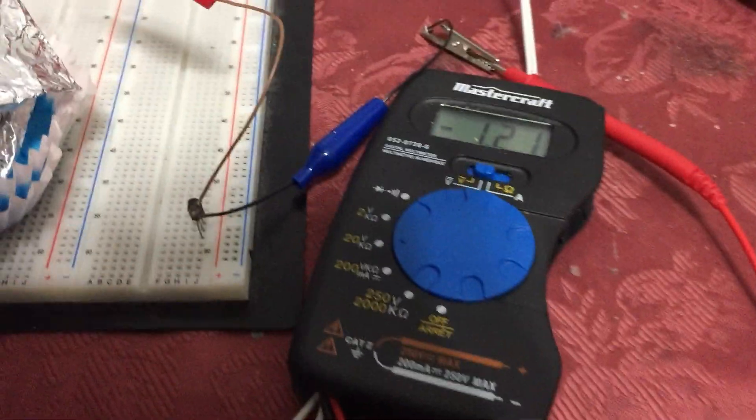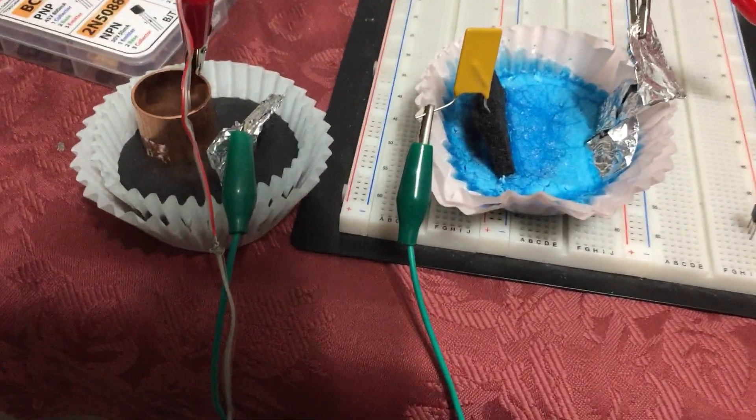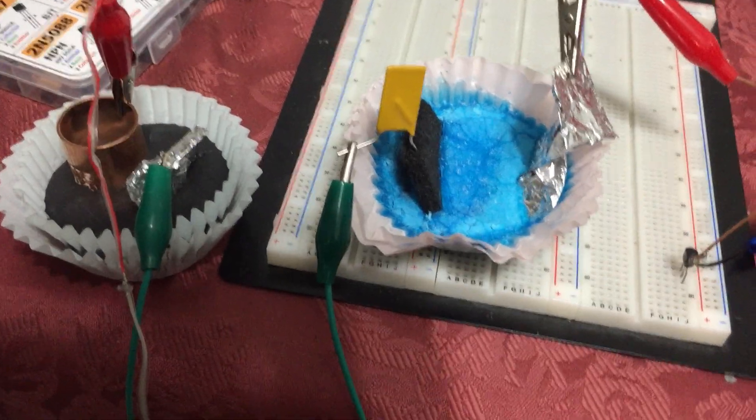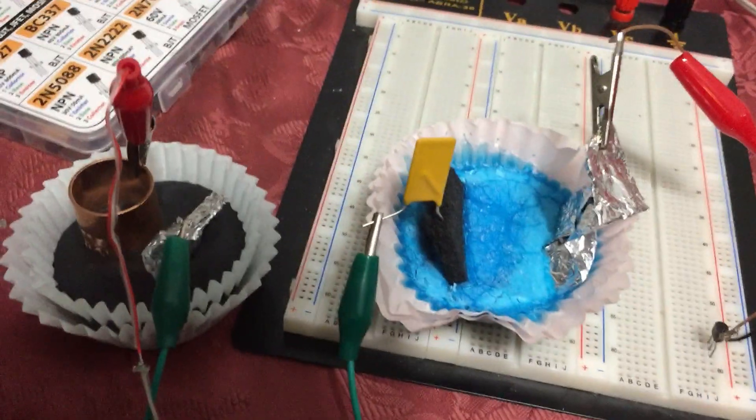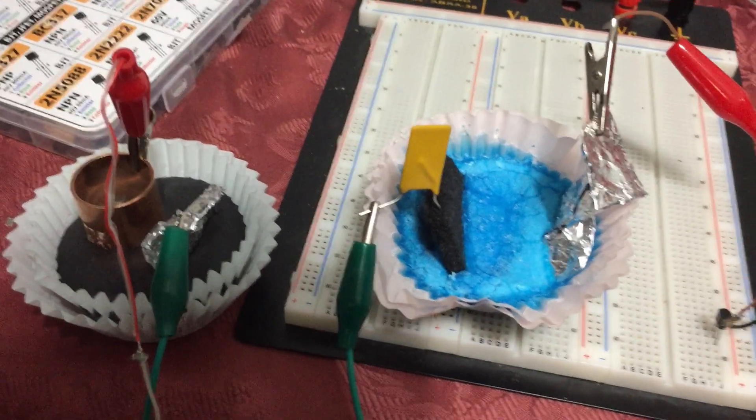So the reason we're getting 1.2 volts is that's the meter completing the loop through the meter's resistance to whatever that is, and it's true—this load that the capacitor has—displacement current.